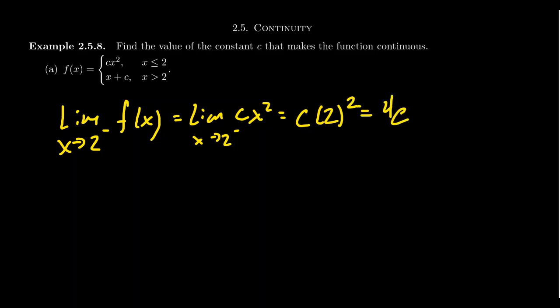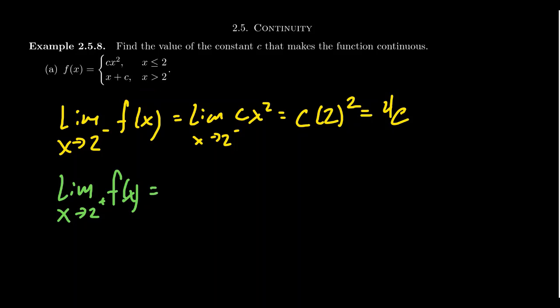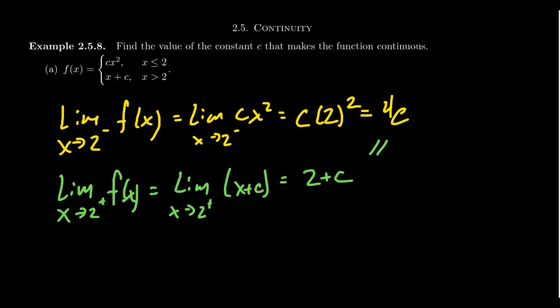Now for the right-handed limit — the limit as x approaches two from the right of f(x) — we consult which domain inside f applies when x is a little bit bigger than two. That's the condition where x is greater than two, so the function looks like x plus c. The limit as x approaches two from the right of f(x) is identical to the limit of x plus c. As the line is a continuous piece, we do direct substitution and end up with two plus c.